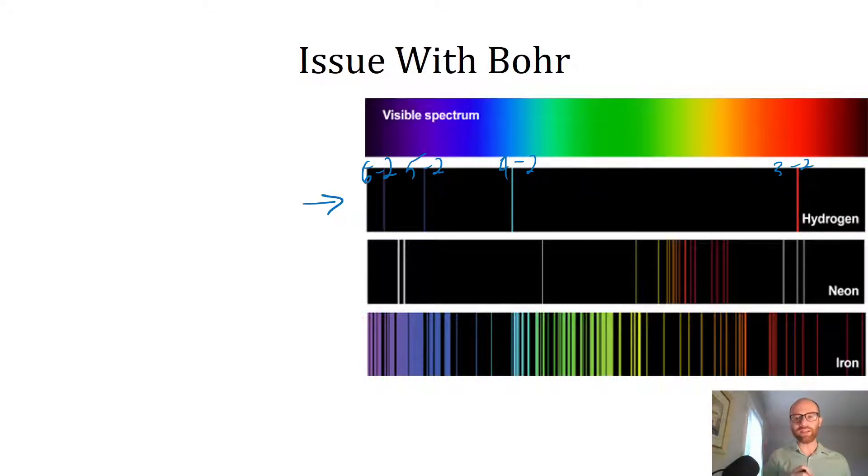When you start looking at things like neon and iron, there's way too many lines. There are too many lines for a Bohr model to be good at explaining what we're seeing. These multi-electron systems can't be explained by the Bohr model of discrete energy levels, so we have to say something more. What ends up happening is that electrons have this interaction with each other that impacts more than just repulsion and attraction.